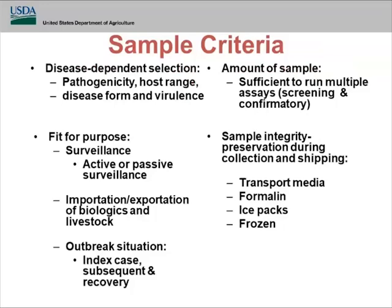Sample criteria — what samples to send — is disease dependent. Vesicular disease samples are different from ASF/CSF or rapid hemorrhagic disease samples. For each disease, there are specific sample types recognized as high value and low effort. Those help you decide which samples you must get and which are optional. There are different criteria for different diseases also because of the type and virulence — classical swine fever, for example, can be very low virulent and the animals will look perfectly healthy.